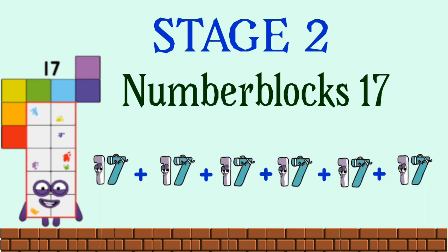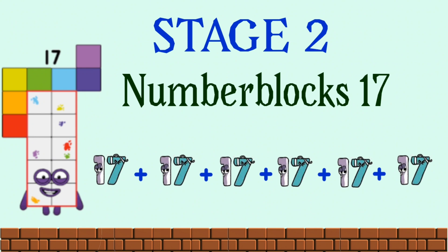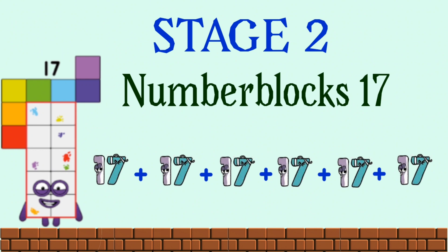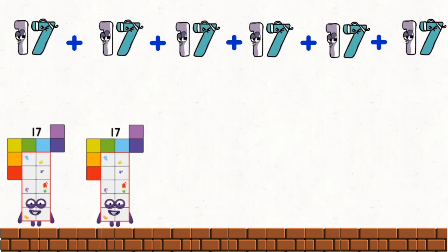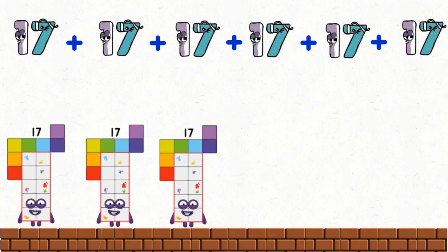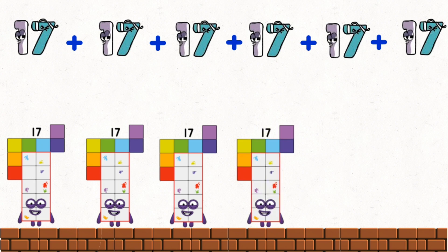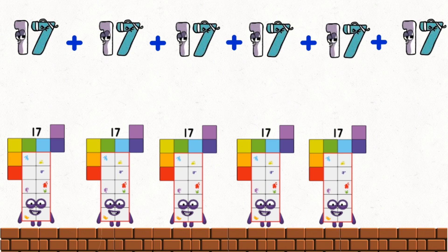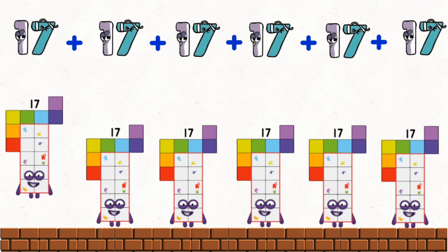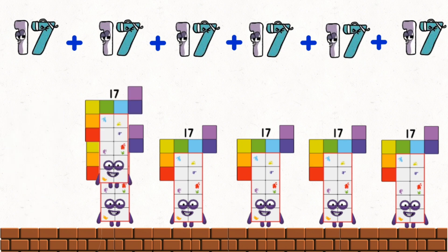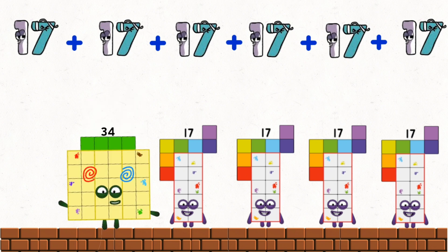Stage 2. Number blocks 17 plus 17 in 5 times. 17 plus 17 equals 34.